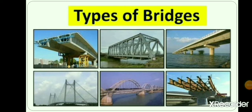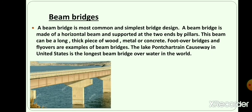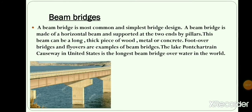Now we are going to study about the types of bridges. There are different kinds of bridges — beam bridges, cantilever bridges, arc bridges, pontoon bridges, and suspension bridges. A beam bridge is the most common and simplest bridge design. It is easy to construct, more functional, and not so costly. Beam bridges are also known as stringer bridges. Foot-over bridges and flyovers are examples of beam bridges. The Lake Pontchartrain Causeway in the United States is the longest beam bridge over water in the world.